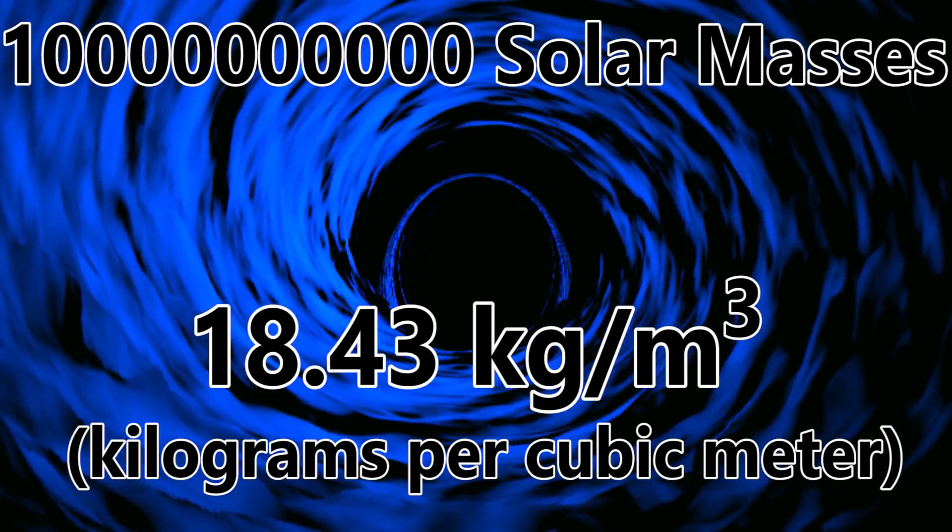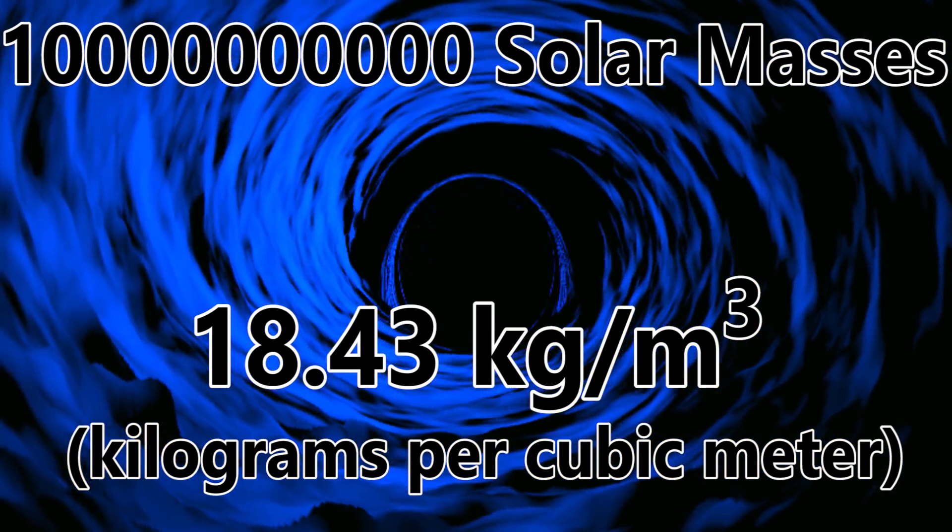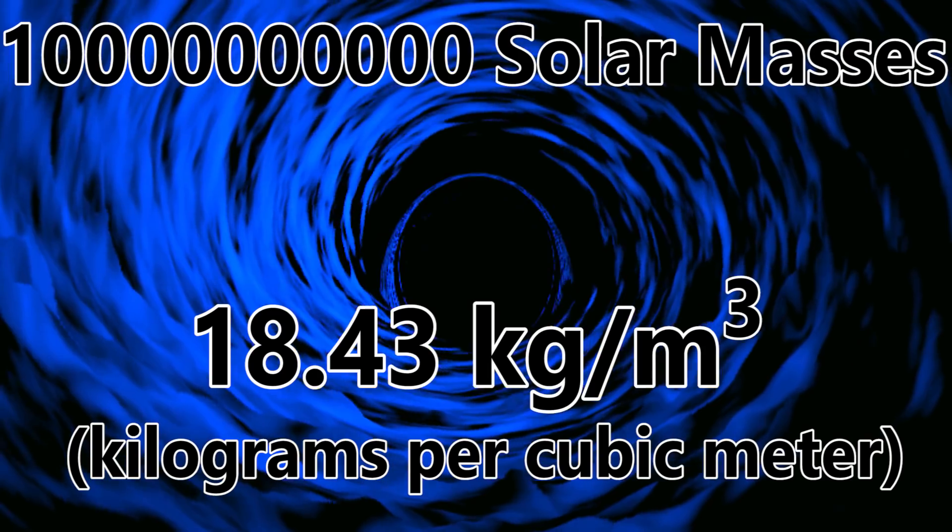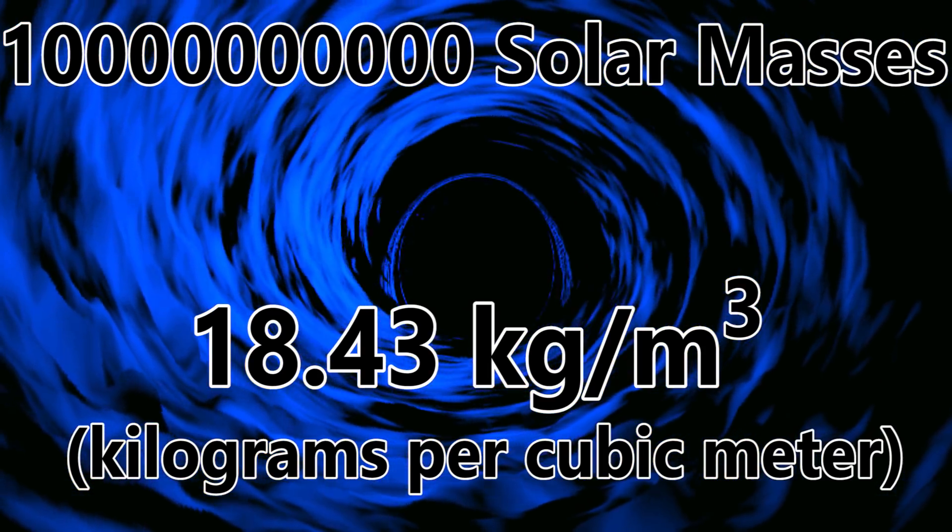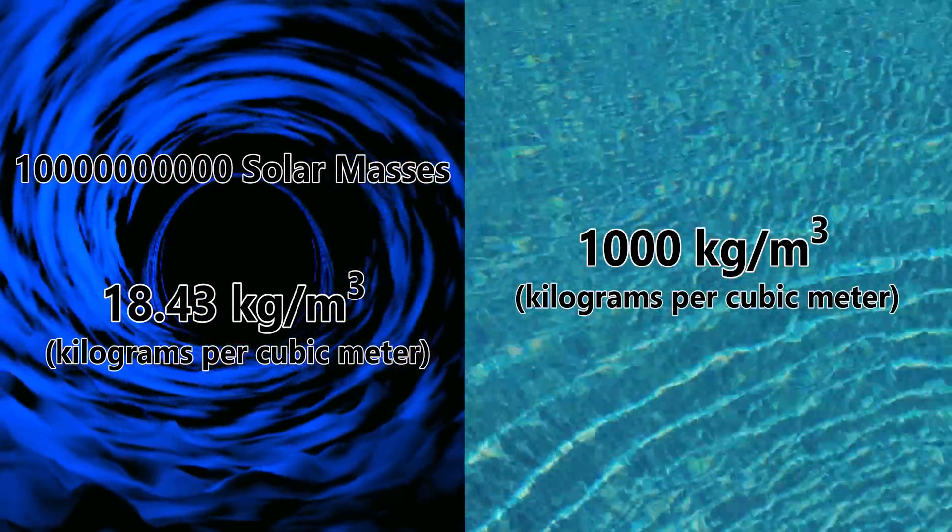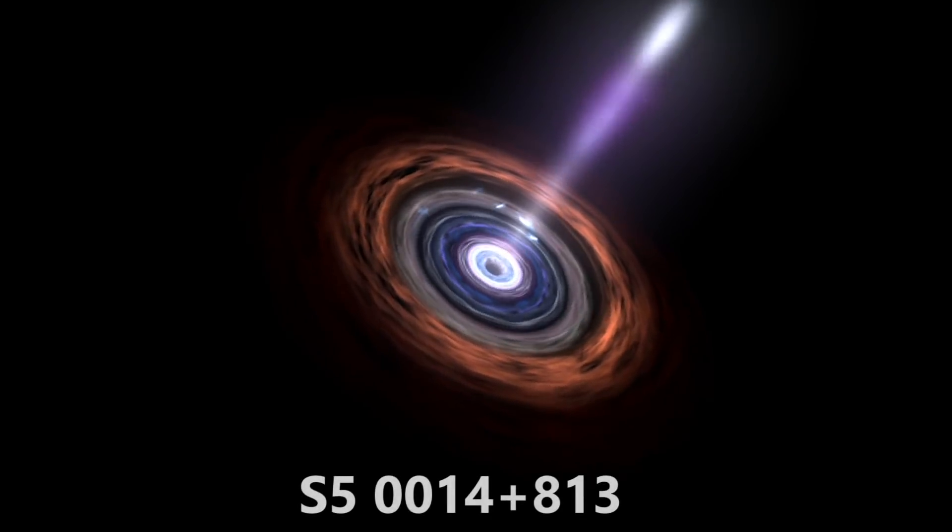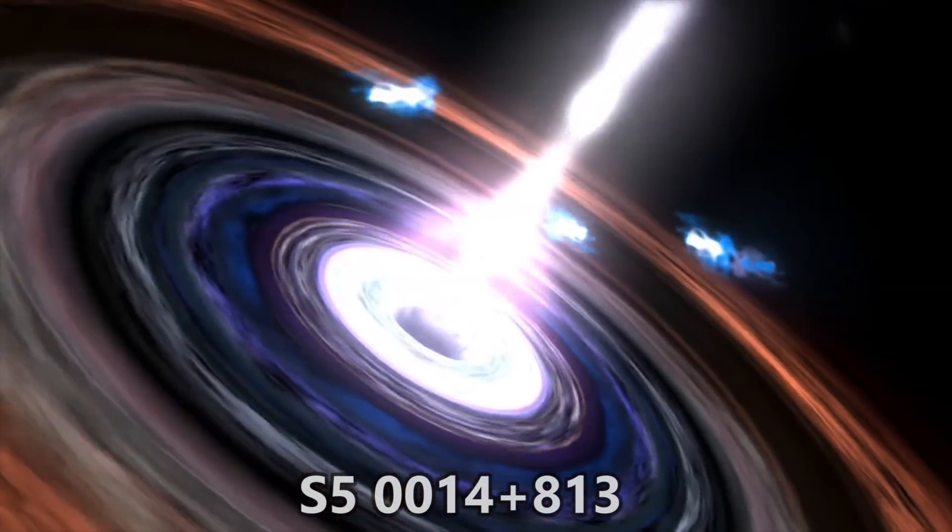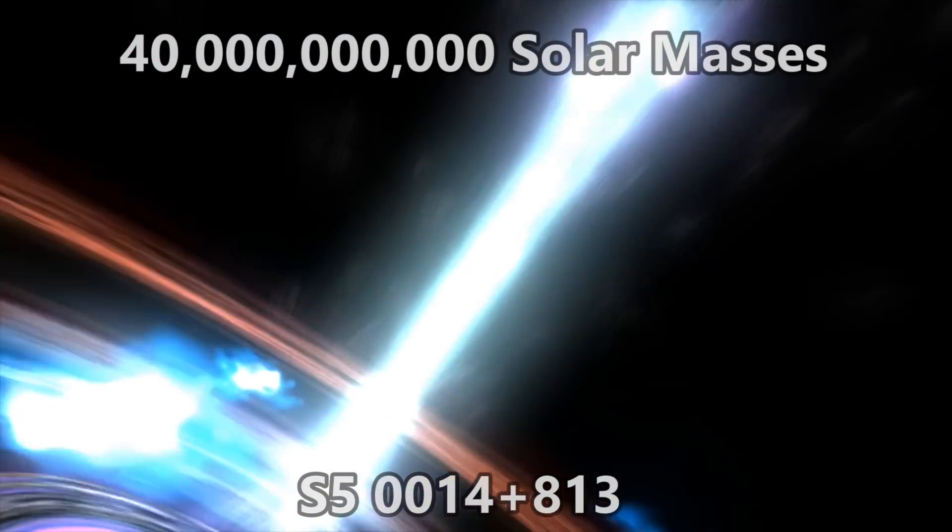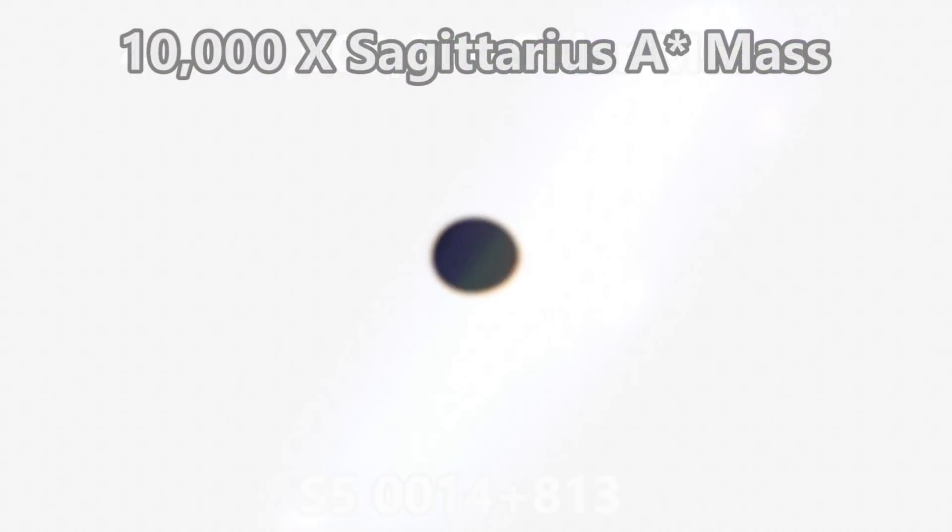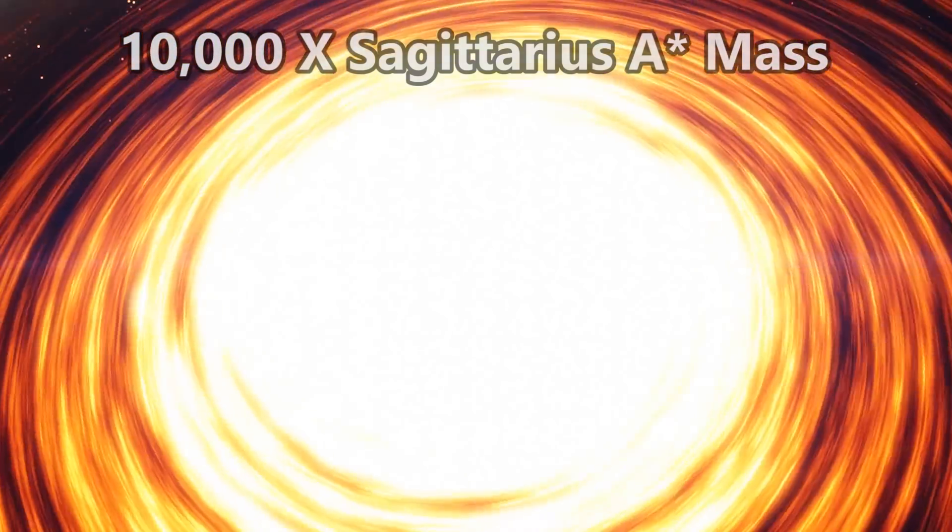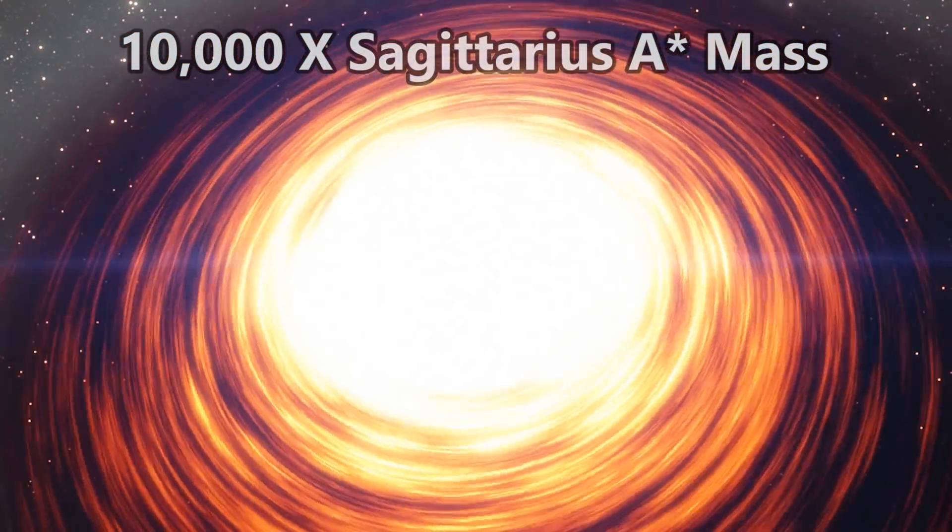You see, the more mass a black hole has, the less dense it is. For example, a black hole that has the mass of Earth is orders of magnitude more dense than that of a neutron star. But that kind of black hole doesn't really exist naturally. For naturally occurring black holes, say one that has five times the mass of our own sun, the density of such black holes is just slightly higher than that of a neutron star. If we go way higher,